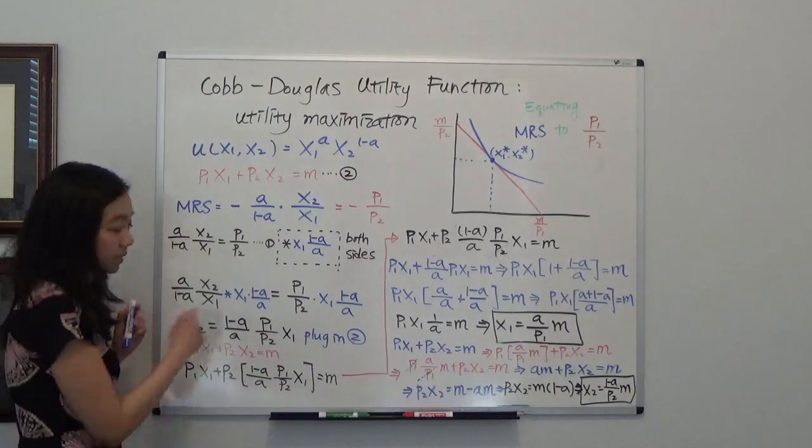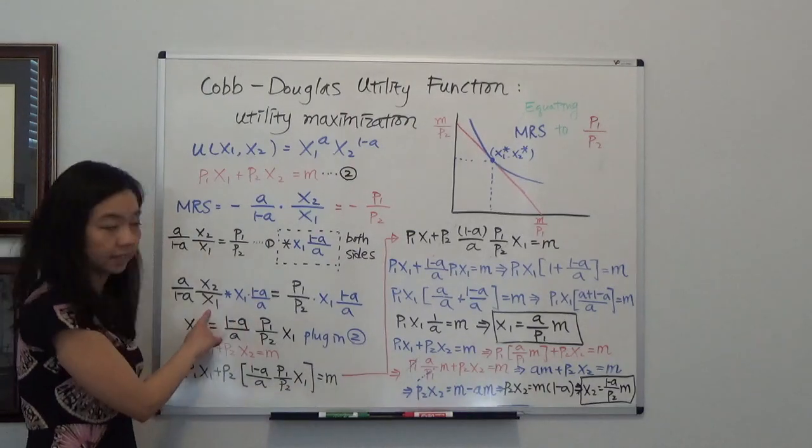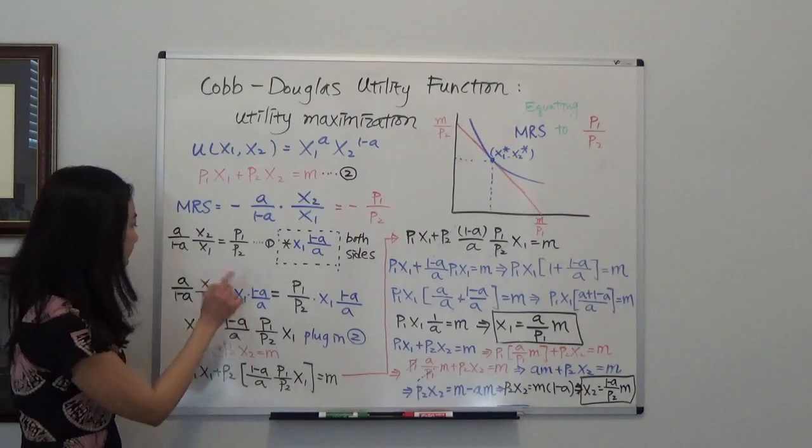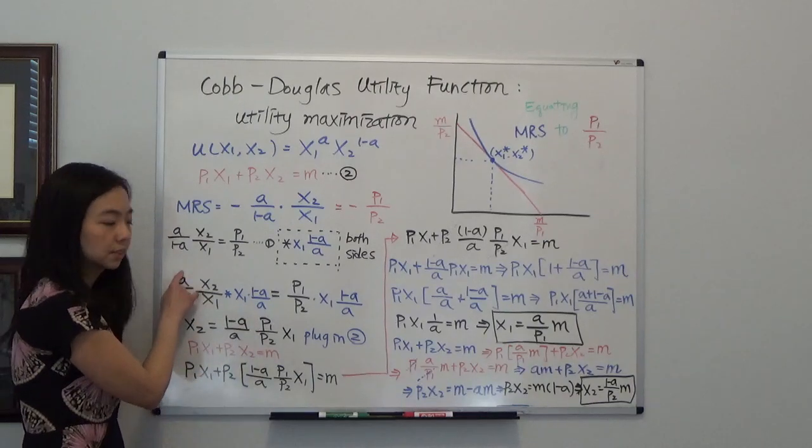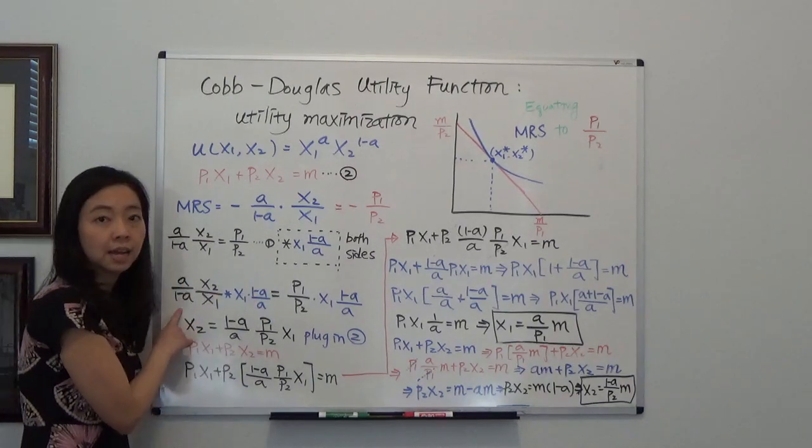And after that, I can cross out several terms. So x1 and x1 here, they cross out. And a and a, they cross out. 1 minus a and 1 minus a here, they both cross out.